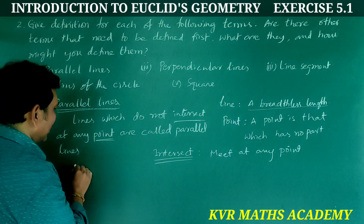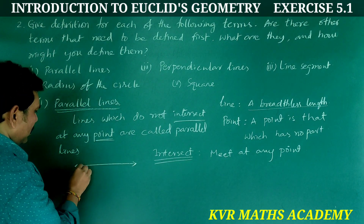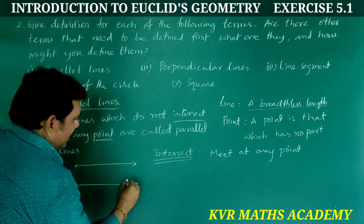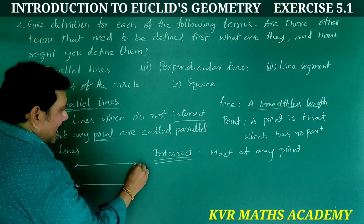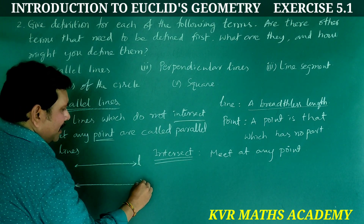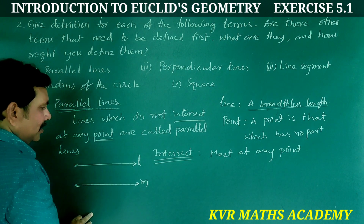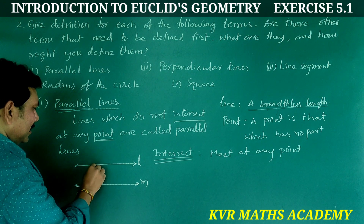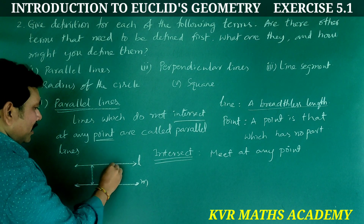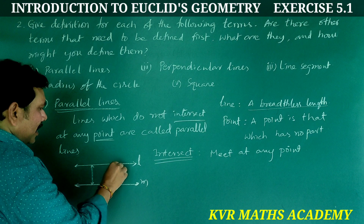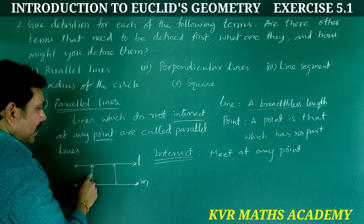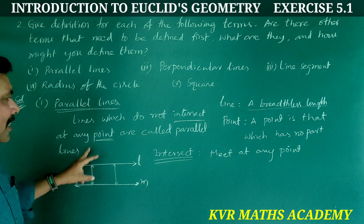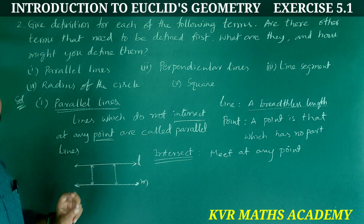Draw one line L and another line M. If they maintain the same distance apart throughout, they are parallel lines — L is parallel to M.